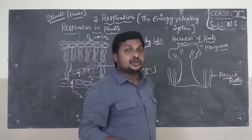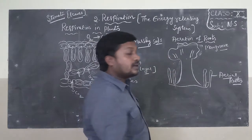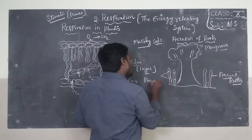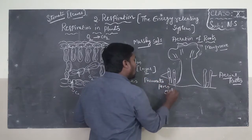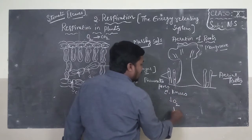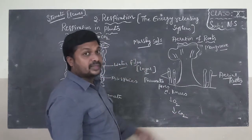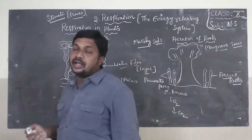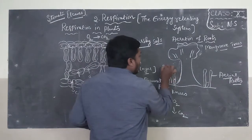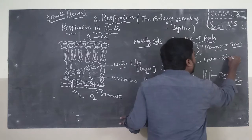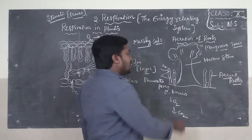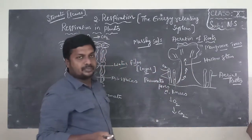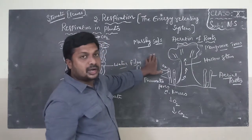Normally roots are present inside the soil, but in these plants roots grow outside the soil — these are known as aerial roots. These aerial roots have small openings called pneumatophores. Pneumatophores help the plant to take oxygen and release carbon dioxide. The oxygen present in the atmosphere enters the plant through pneumatophores. The plant also has a hollow stem, which transports oxygen inside. CO2 comes outside from the plant. This exchange of gases is called aeration of roots.